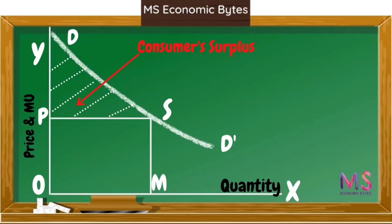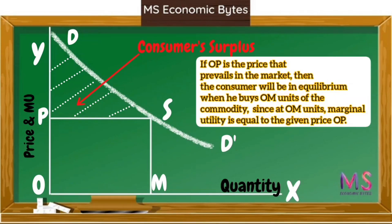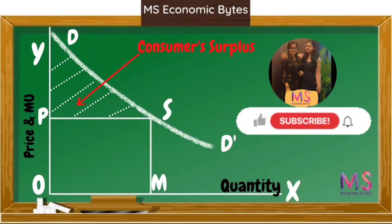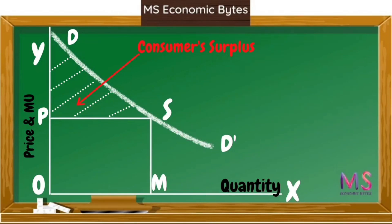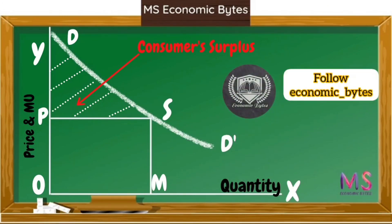Now let us understand consumer surplus through the diagram. The OY axis represents price and marginal utility, and the OX axis represents quantity. If OP is the market price, the consumer will be in equilibrium when buying OM units of the commodity, since at OM units marginal utility equals the given price OP. The Mth unit yields no consumer surplus since it is the last unit purchased and price equals marginal utility. For units before the Mth, marginal utility is greater than price, and these units yield consumer surplus.